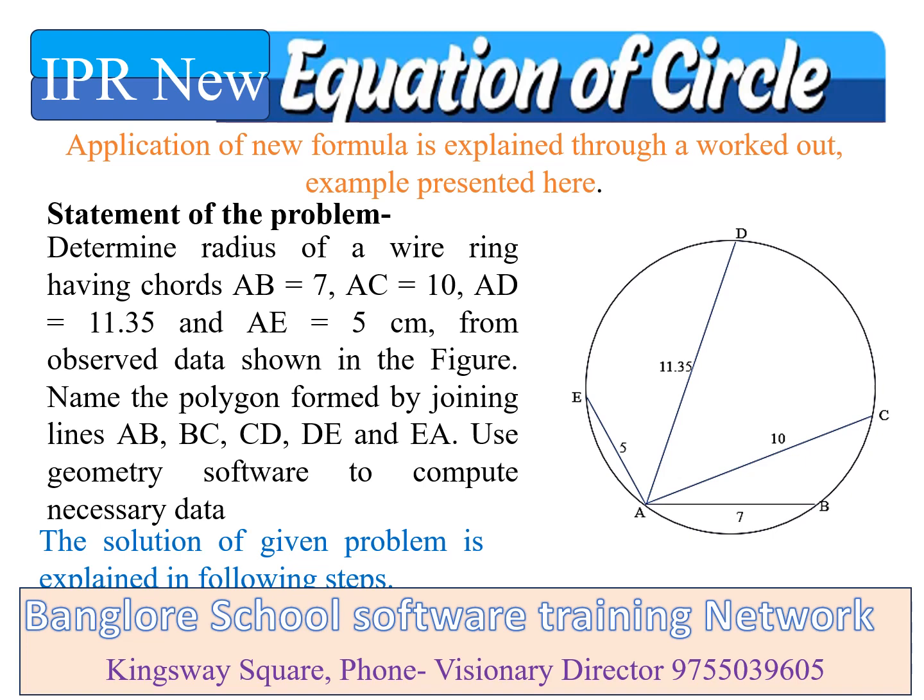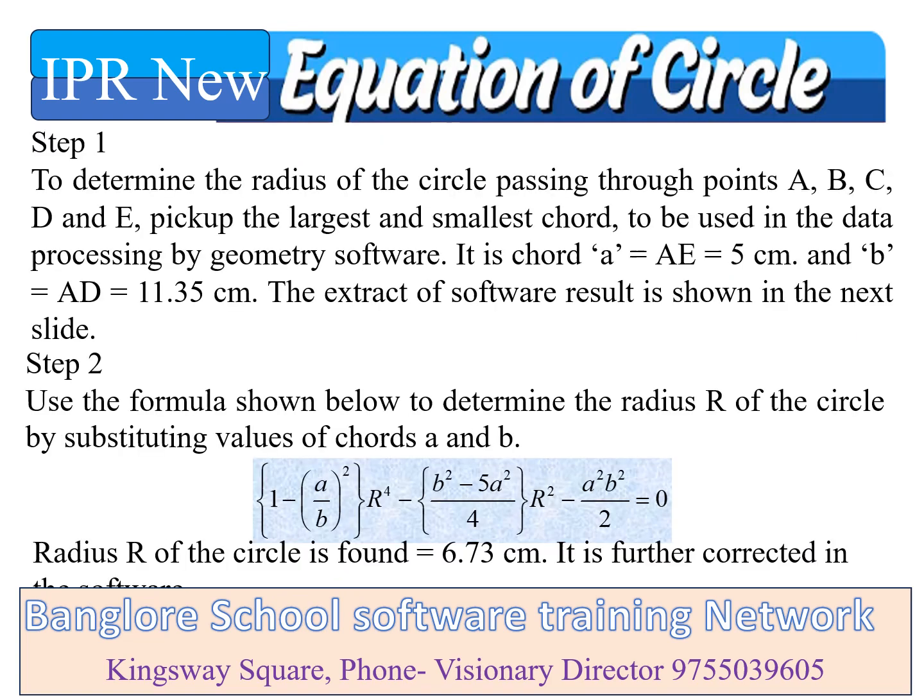Use geometry software to compute the necessary data. The solution is explained in the following steps. Step 1: To determine the radius of the circle passing through points A, B, C, D and E, pick up the largest and smallest chord to be used in data processing by the geometry software. The smallest chord is A = AE = 5 cm and the largest is B = AD = 11.35 cm. The extract of software results is shown in the next slide.